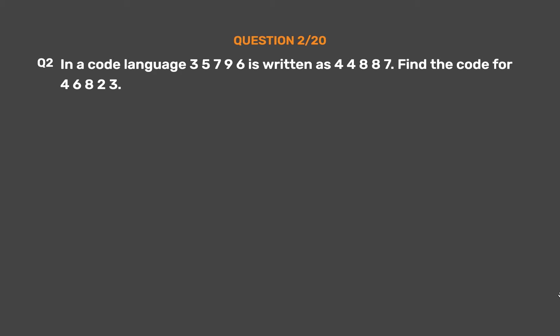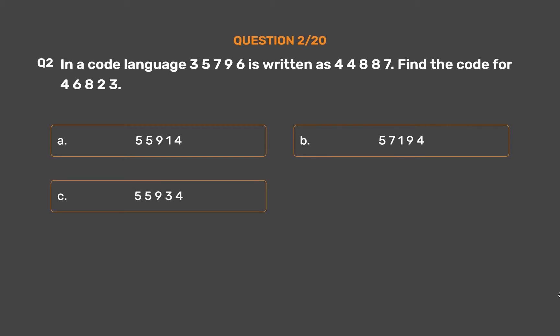Question number 2: In a code language, 35796 is written as 44887. Find the code for 46823. Option A: 55914. Option B: 57194. Option C: 555934. Option D: 55745.